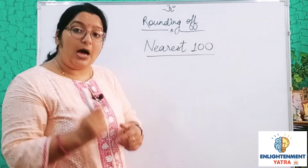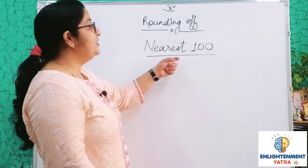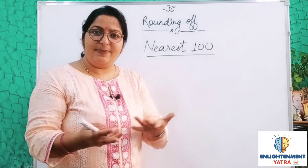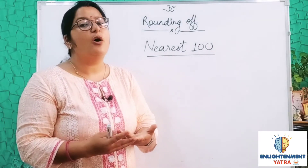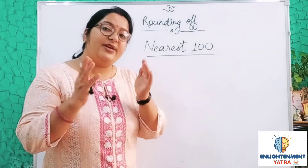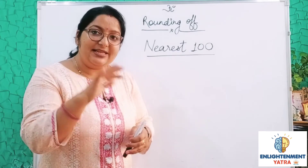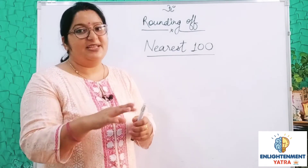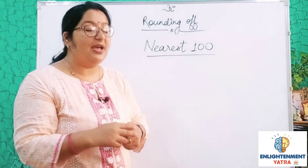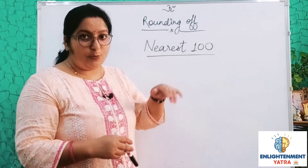Champions, now I will teach you rounding off to the nearest 100. Supposingly, you have a number and you have to round off to the nearest 100. We will apply the same rule. Greater than 5 and less than 5 — you have to keep your attention on that. And then I will tell you how to do it.